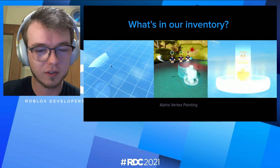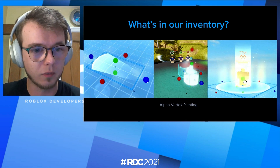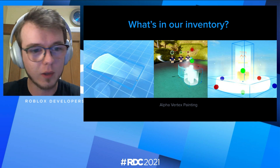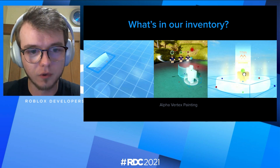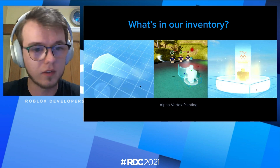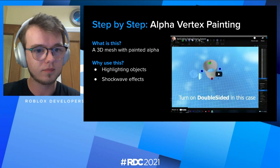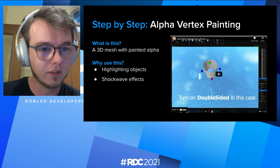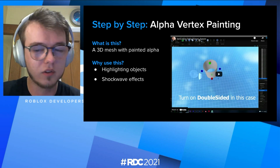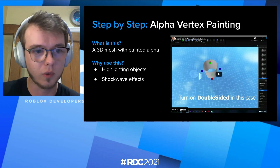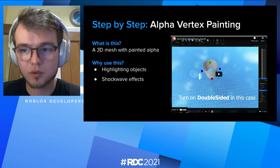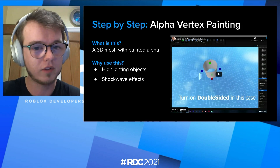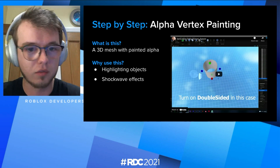We also have alpha vertex painting. It's a feature that is sort of hidden in how you implement it on Roblox, but it can be really useful for visual effects. It is a 3D mesh with painted alpha on it. You can use it to highlight objects, or use it in your visual effects for shock waves, etc. I put together a tutorial of how to actually implement this — I'm using 3ds Max, but you can use your preferred 3D software.